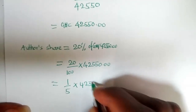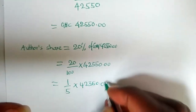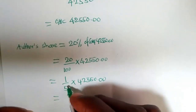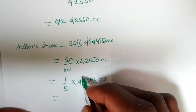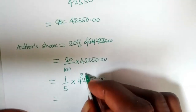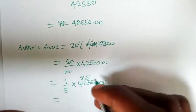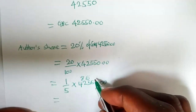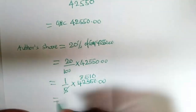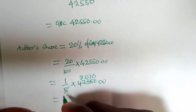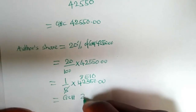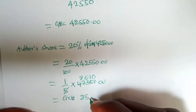20 over 100 times 42,550 is the same as one over five times 42,550. So we are dividing 5 into 42,550. You can use long division to cross-check that. This gives us 8,510 cedis as the author's share.